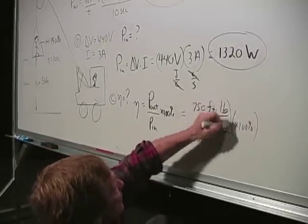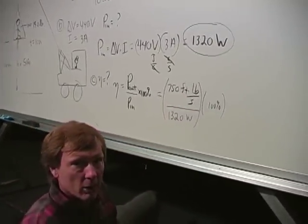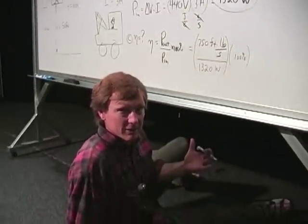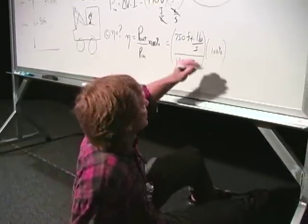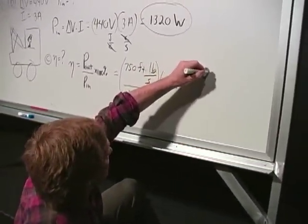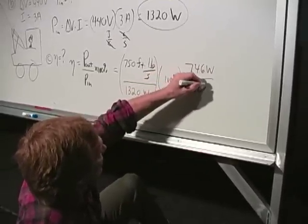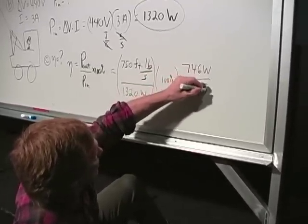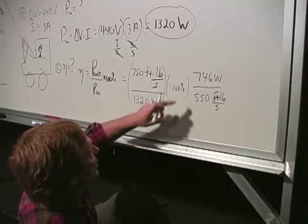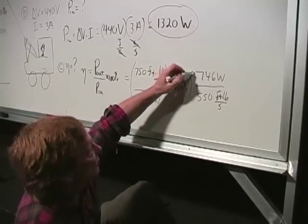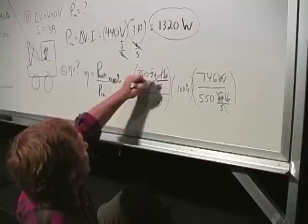And that's equal to, the output power is 750 foot-pounds per second divided by the input, which is 1,320 watts times 100%. But I've got to get these to the same units. So what I'm going to do is I'm going to multiply. Let's see, I know that one horsepower in the equations, I know what it is, and so I'll use this conversion. There are a few different ways to do it, but I know that 746 watts is one horsepower, and that's the same as 550 foot-pounds per second. These are both one horsepower, so it's a valid conversion. And the watts will cancel and the foot-pounds per second will cancel.